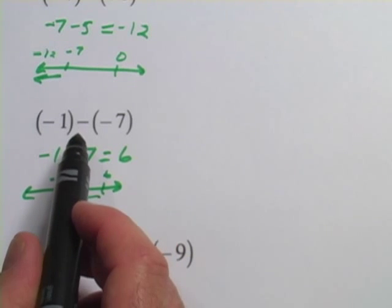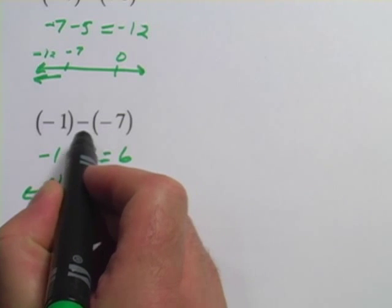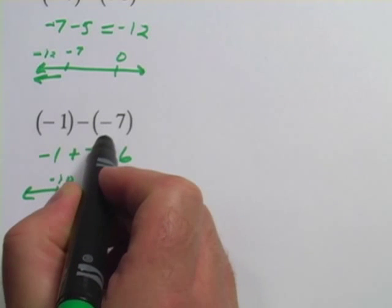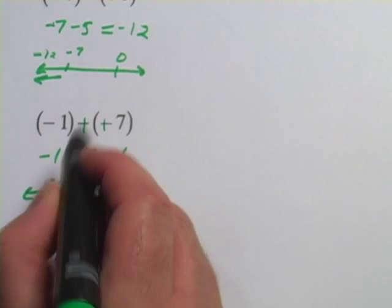Another way to think about this is when you see two minus signs in a row and the only thing separating them might be a parenthesis, for every two minus signs, you can turn them into a positive.